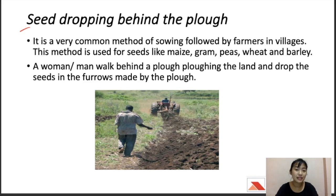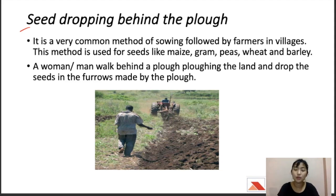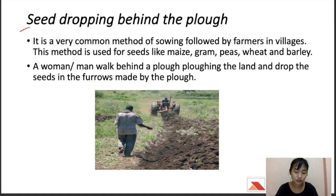Seed dropping behind the plow is a common method of sowing. A person walks behind the plow: as the plow goes through the land, the person drops seeds into the furrows made by the plow. Crops commonly sown through this method include maize, gram, pea, wheat, and barley.